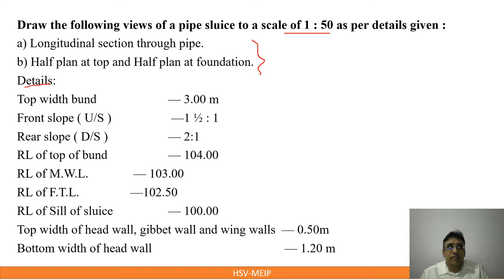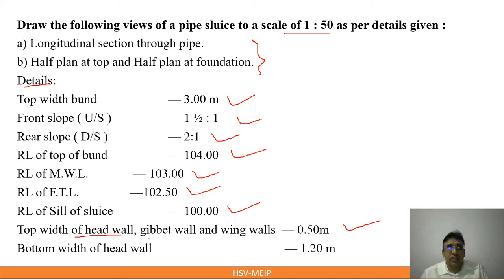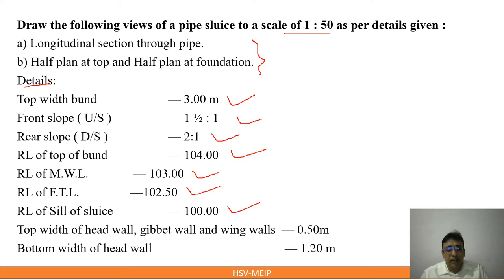Details are given: top width of the bund 3.0 meters, front slope upstream side slope 1.5 to 1, downstream slope 2 to 1, RL of top of bund 104.00, RL of MWL 103.00, RL of FTL 102.50, RL of sluice 100.00. Top width of head wall, gibbet wall and wing wall is 0.5 meter. Bottom width of the head wall is 1.2 meter. Even if in an examination the top width is not given, you have to assume it.